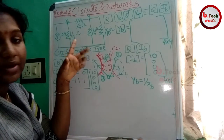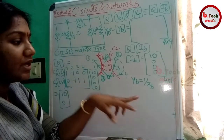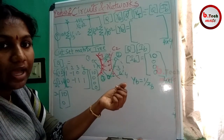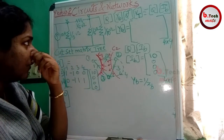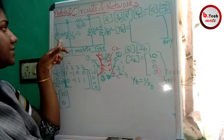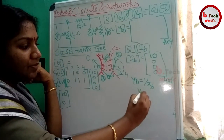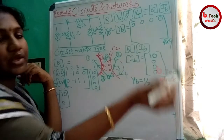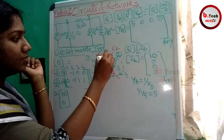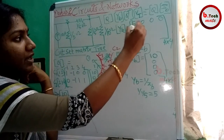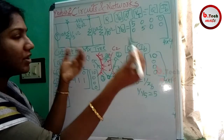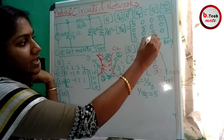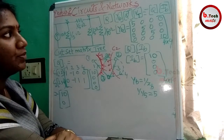If Yb is 1 by 5, 1 by 5, 1 by 10, and so on, it is reciprocal of Zb. The first branch connected to the first twig has resistance 1 by 5, so admittance is 1 divided by (1/5) which equals 5. The second branch has admittance 5, the third branch has admittance 5, and the last branch has admittance 10. We now have the full Yb matrix to use.